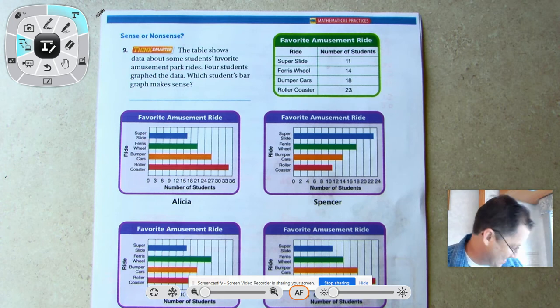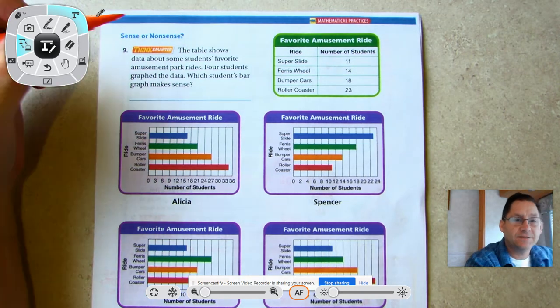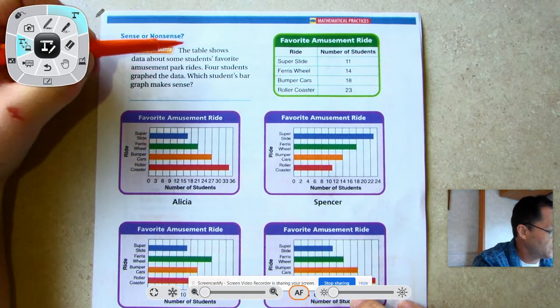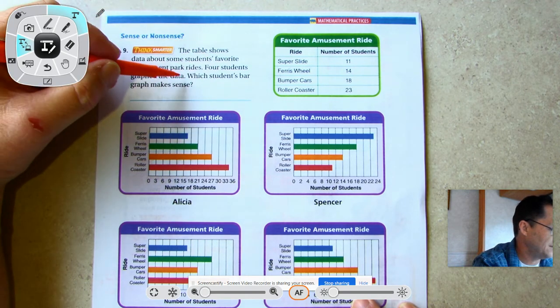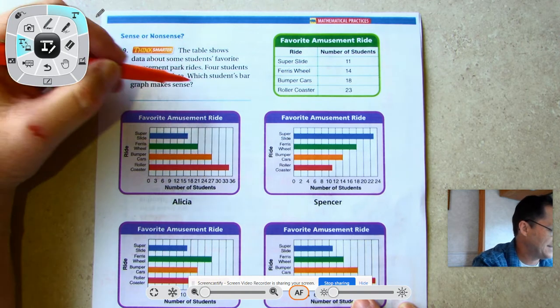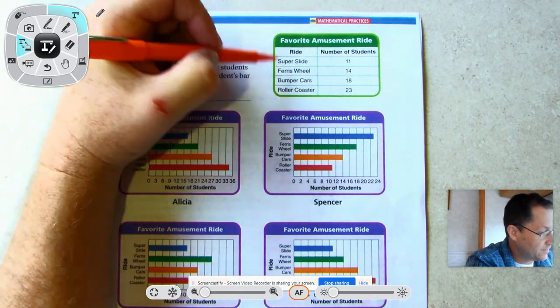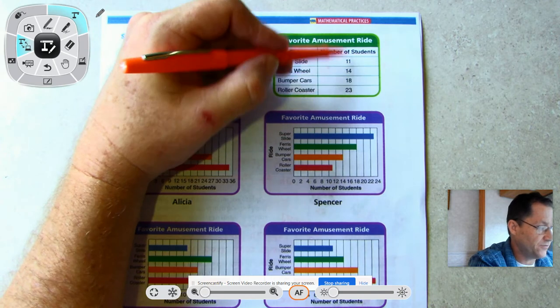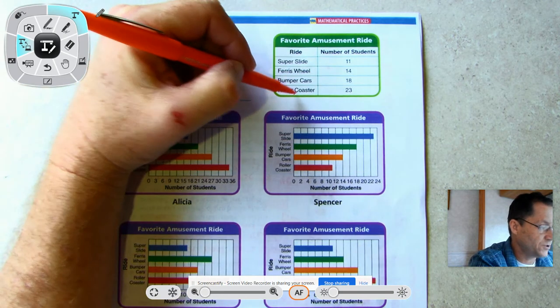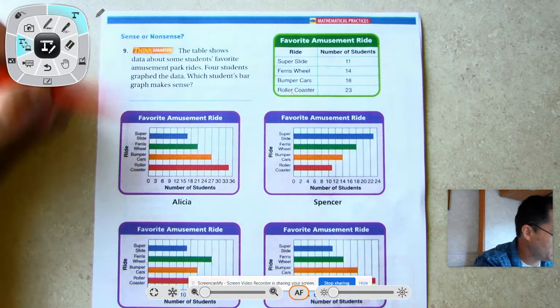We're going to critique this problem - sense or nonsense. The table shows data about some students' favorite amusement park rides. Four students graph the data. Which students' bar graph makes sense? We have favorite amusement ride - there are four different types of rides, and these are the number of students that chose each of those rides. Roller coaster should be the longest bar. Roller coaster longest - this one right here, immediately just looking at the length of the bars, that can't be right.